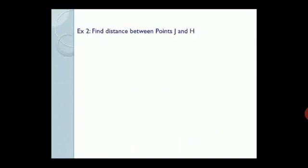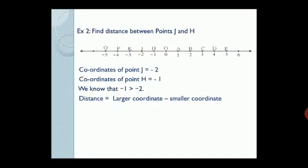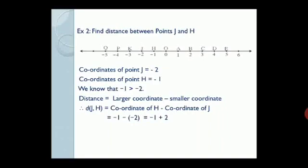Let us solve one more example. Find the distance between points J and H, referring to the same number line. The coordinate of point J is negative 2 and the coordinate of point H is negative 1. Here both the coordinates are negative. We know that negative 1 is greater than negative 2. Therefore, distance JH is equal to coordinate of H minus coordinate of J, which is equal to negative 1 minus negative 2, which is equal to negative 1 plus 2, and the answer is 1 unit.